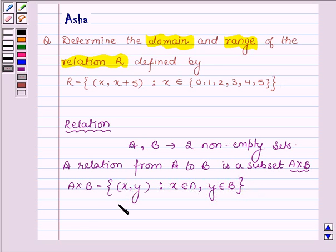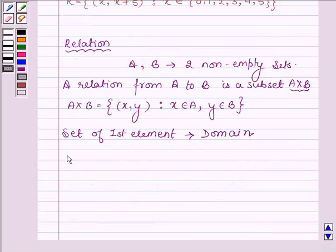Now the set of all the first elements of these ordered pairs is called the domain of the relation, and the set of second elements of the ordered pairs is called the range of the relation.